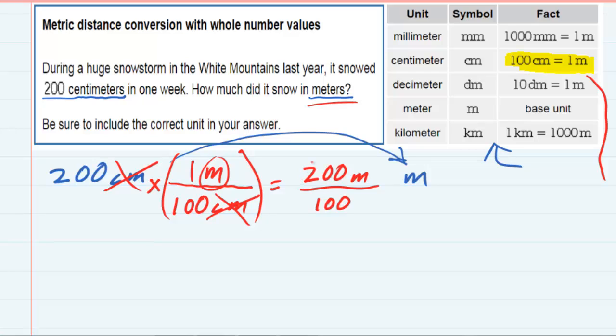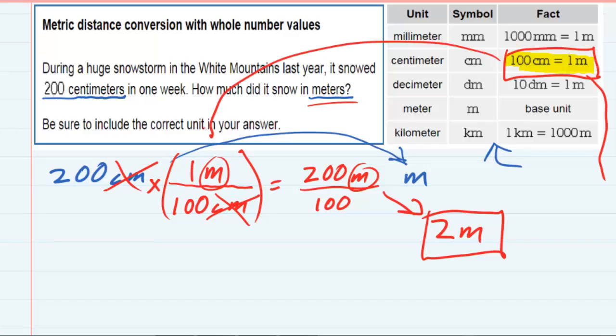So the last thing I need to do is just simplify this fraction. 200 meters divided by 100. 200 divided by 100 gives me just 2, and the meters are still there. Using the chart to find my conversion factor is the key to converting from one unit to another.